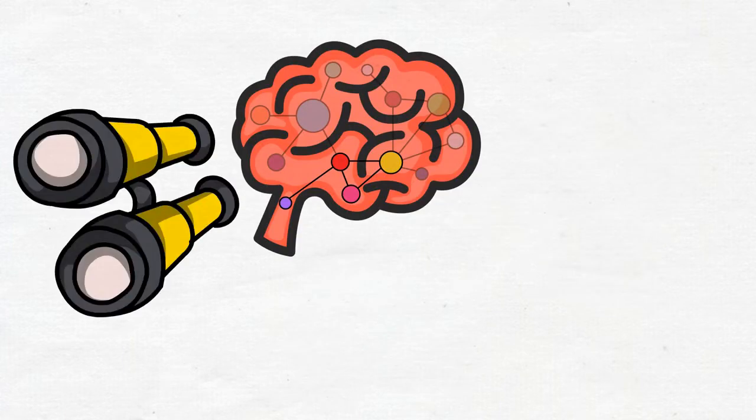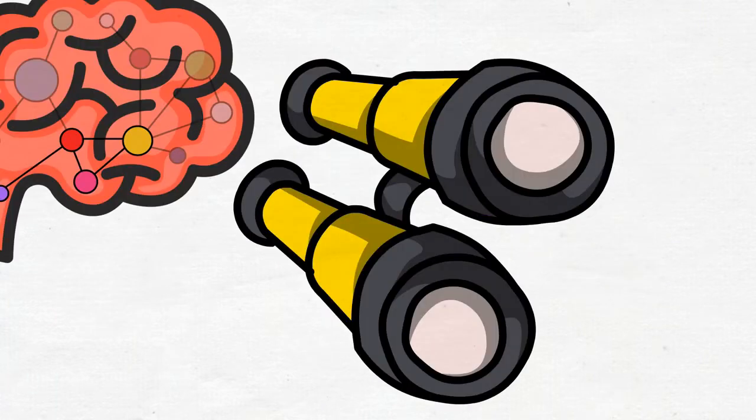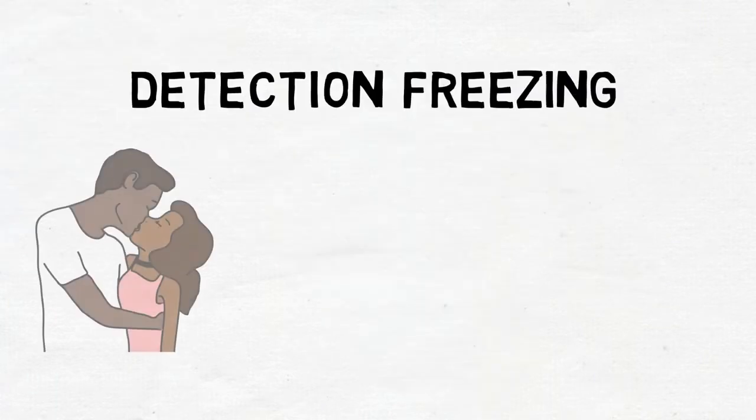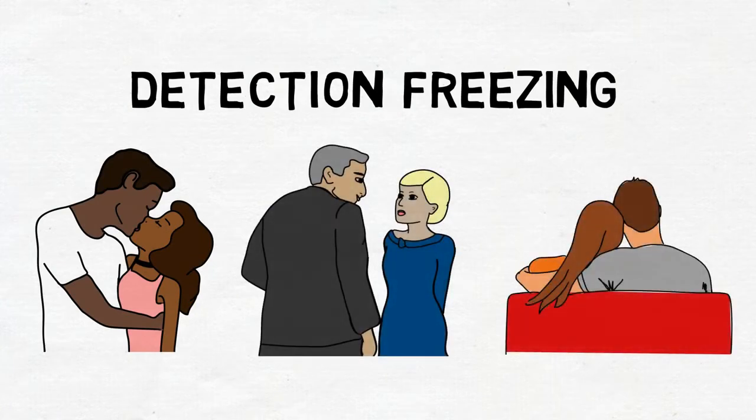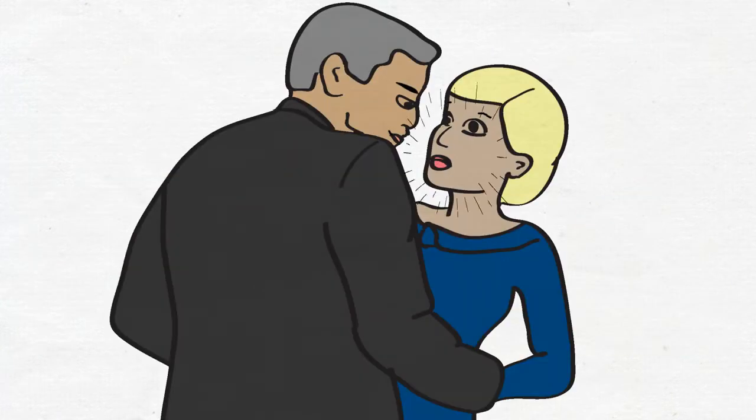The first type of freezing is detection freezing. It happens at the beginning of many sexual assaults, when the brain's defense circuitry detects that a normal and expected situation—kissing a date, talking with a boss, watching a movie with a friend—has suddenly escalated to something unwanted.